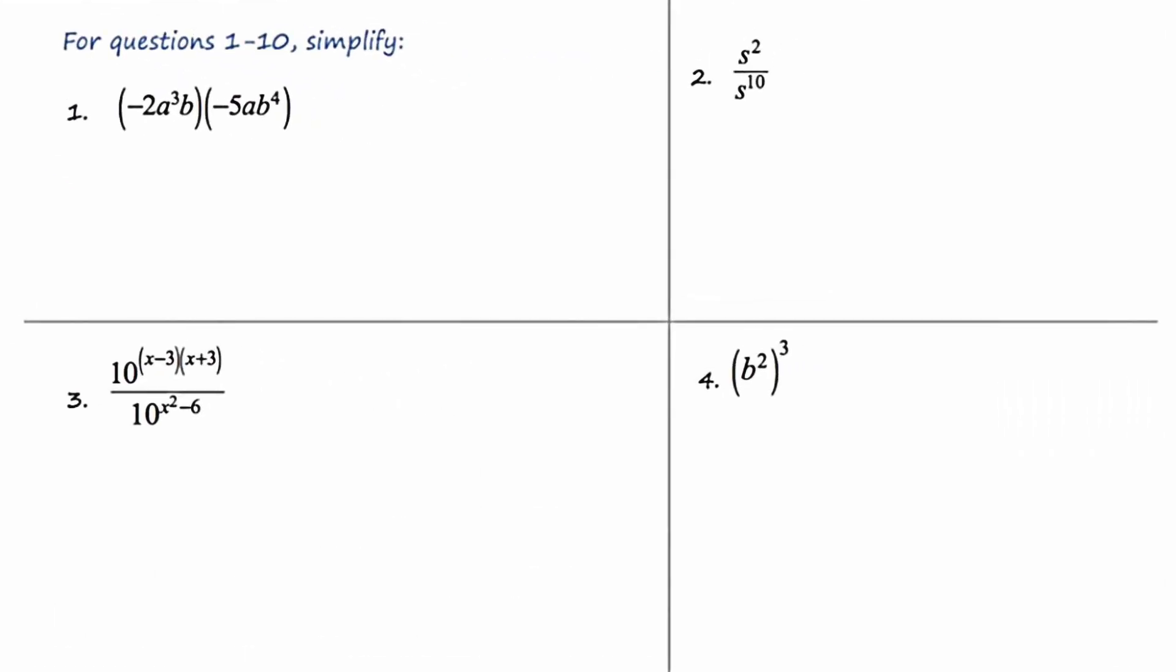Okay, I hope you've had a moment to re-familiarize yourself with those rules of exponents. Now we're going to look at some specific examples and I'd like you to take detailed notes on these examples into your packet as I do them here on the video. Those notes might be checked tomorrow. So we'll start with number one. We're supposed to simplify the product of these two monomials, negative 2a cubed b times negative 5ab to the fourth.